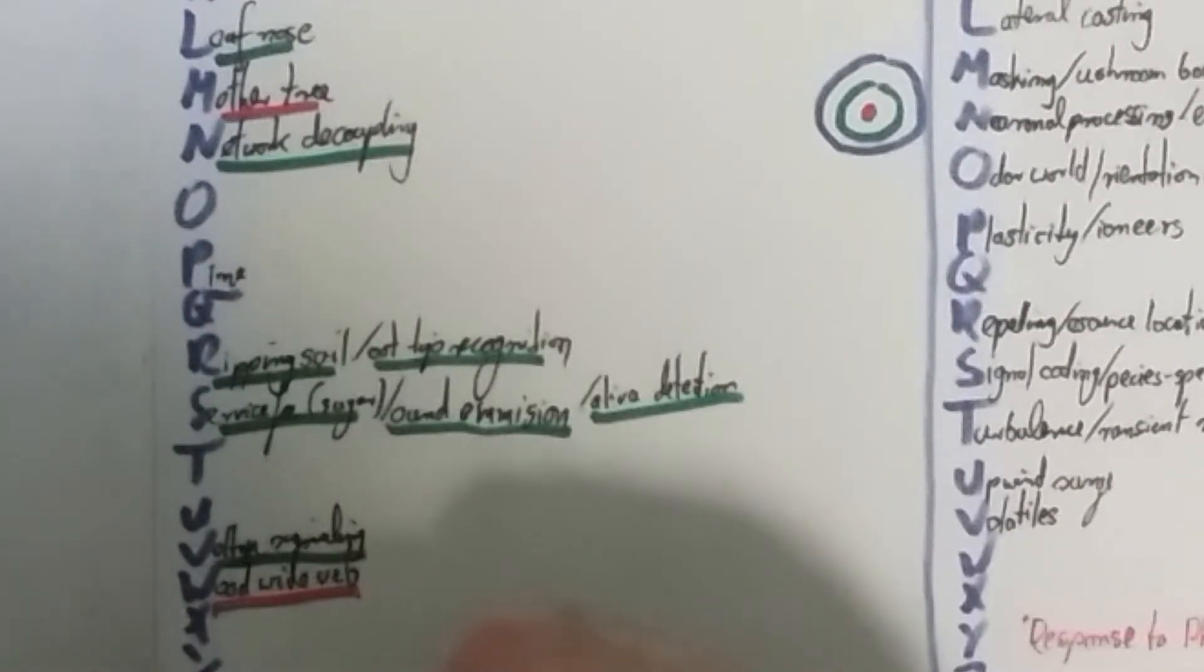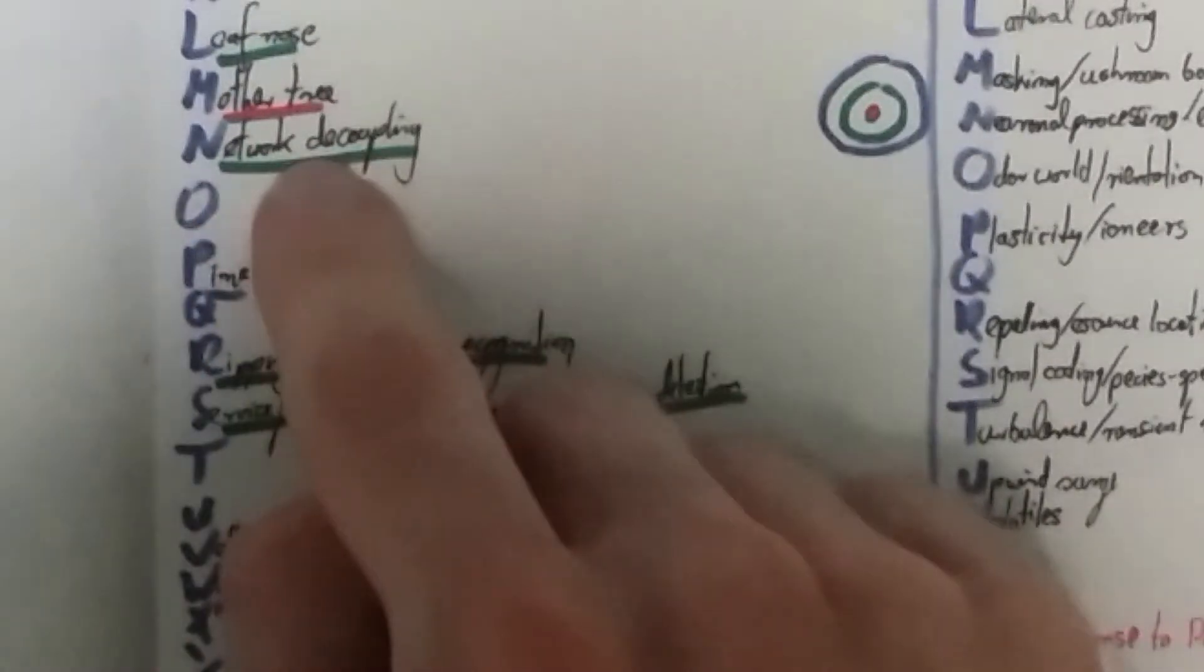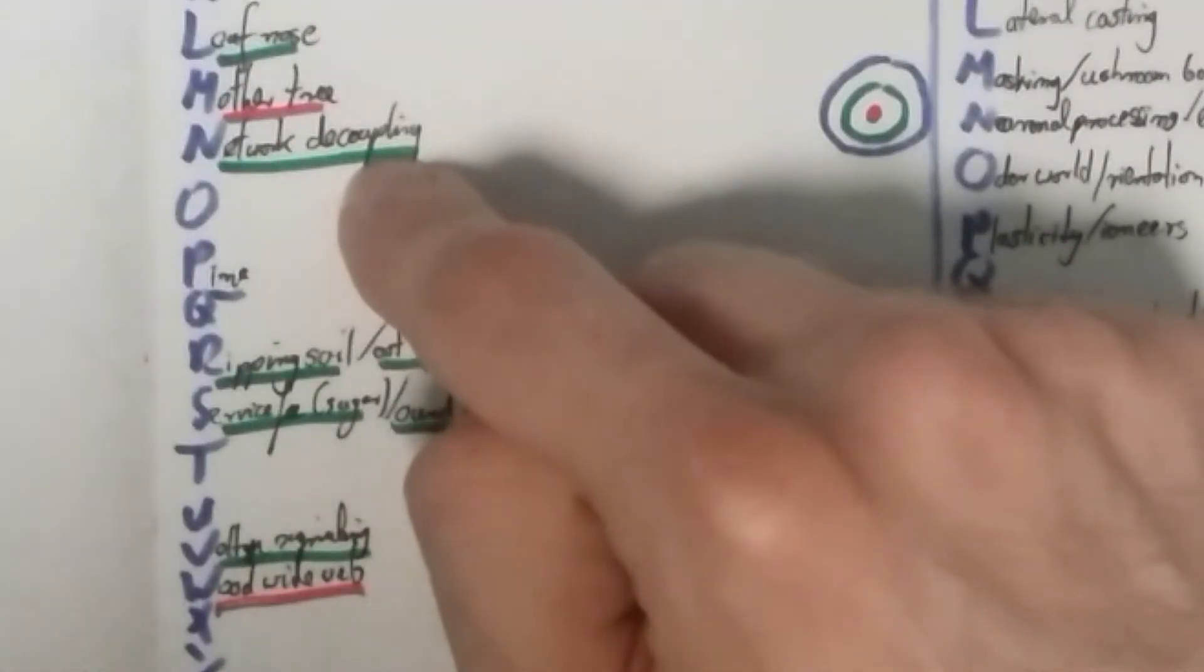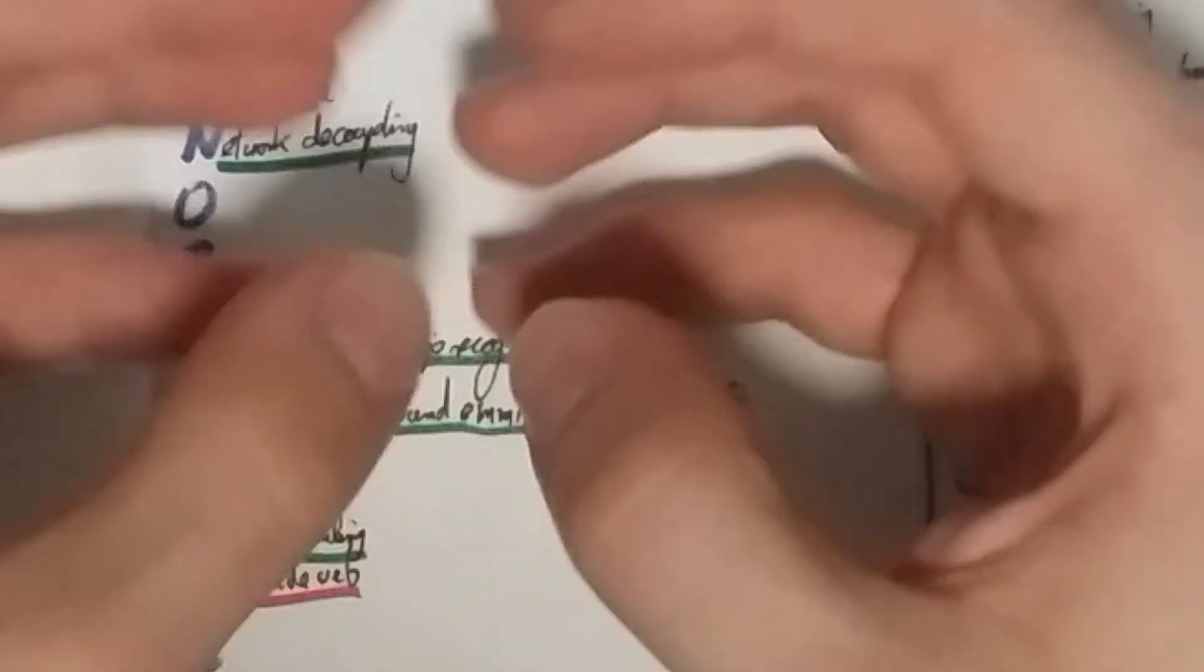Mother tree. This is similar to hub tree. Network decoupling. I can't actually remember why decoupling. I mean, network, I think it goes to fungal network. What is decoupled? How the network is decoupled from one another? I can't remember.